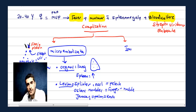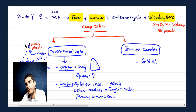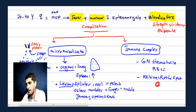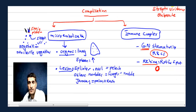The second complication mechanism is immune complex deposition. This causes two things: either the patient presents with glomerulonephritis — presenting as hematuria plus red blood cell casts — or the retina is affected, called Roth's spots. Roth's spots are a white center surrounded by a hemorrhagic red area on the retina. Glomerulonephritis is the more clinically important one.